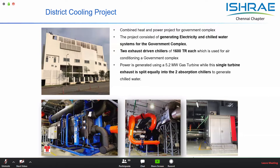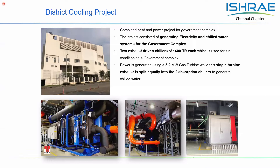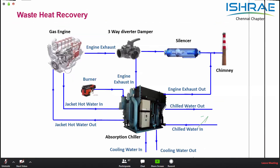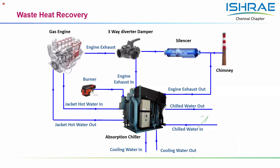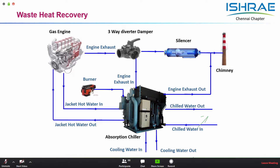Such projects are very well established. An engine-based heat recovery system includes the engine, a three-way diverter valve to control the flow of exhaust gas into the chiller, and can make use of engine jacket water as well. There can be a provision to fire natural gas directly so that in the absence of engine operation, or when the exhaust gas or jacket water has low heat value due to part-load engine operation, we can still achieve the full heating or cooling requirement by firing natural gas.